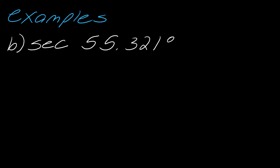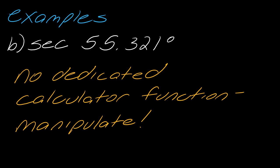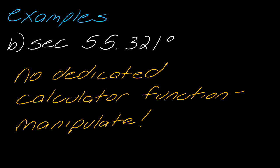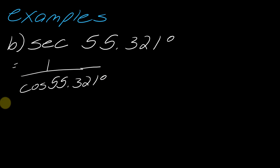Okay, so moving on to secant of 55.321 degrees. Alright, so the deal here is there is no dedicated calculator function for secant or cosecant or cotangent. So, when this happens, you've got to manipulate this. So, remember that secant is equivalent to 1 over cosine. So, I'm literally just going to rewrite the same function except 1 over cosine of that degree measure. And then if I plug that into my calculator, I get 1.7554. And so, that's it for that one.